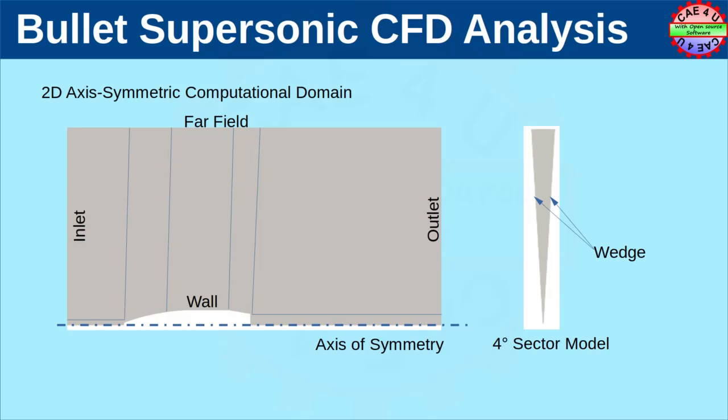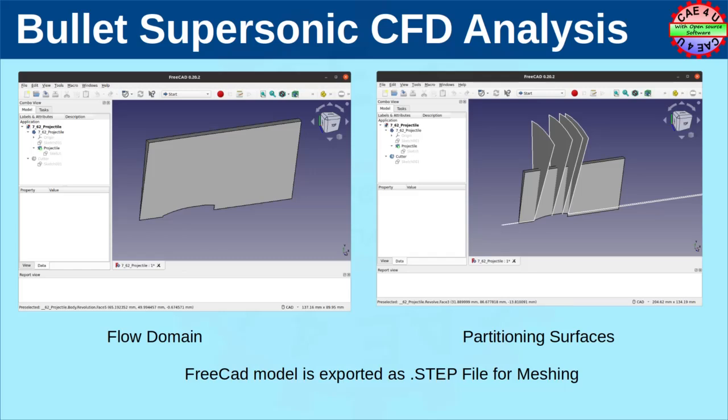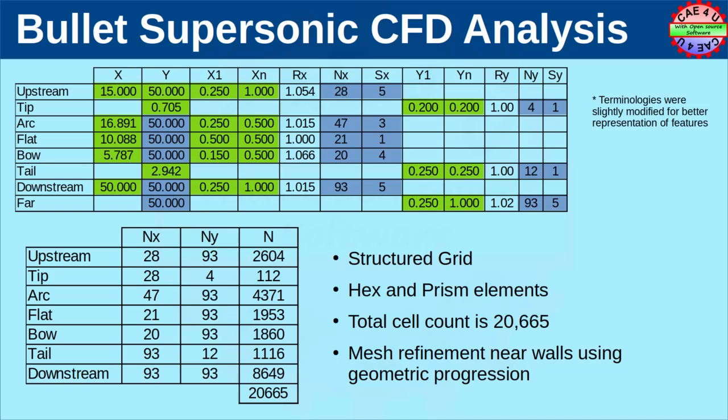A 4-degree sector model is used for this simulation. It consists of the inlet patch, the outlet patch, and a far field zone. The bullet surface is considered as a wall. In order to create a structured mesh, partitions are made which are indicated by the blue lines. The flow domain and the partitioning surfaces were exported as a STEP file for meshing. For better computational efficiency, structured grids are preferred. Due to the wedge shape near the axis of symmetry, it is not possible to create pure hex elements. However, it is possible to create hex and prism elements which are mapped and structured. The total cell count is about 20,000.